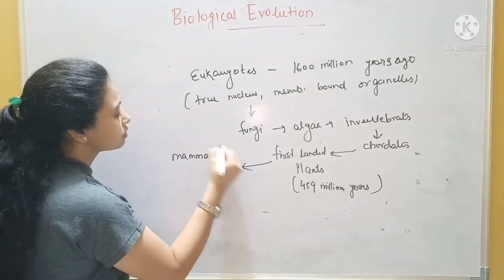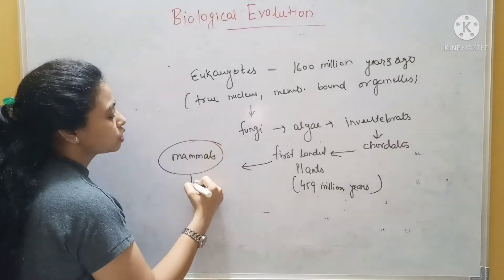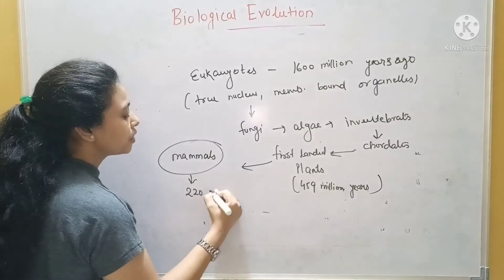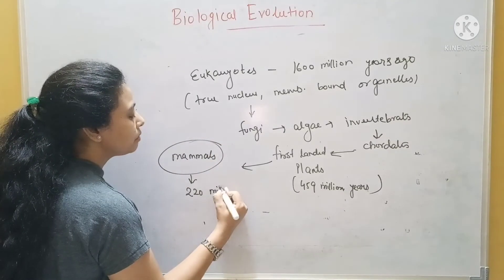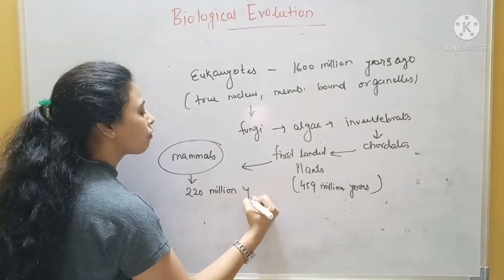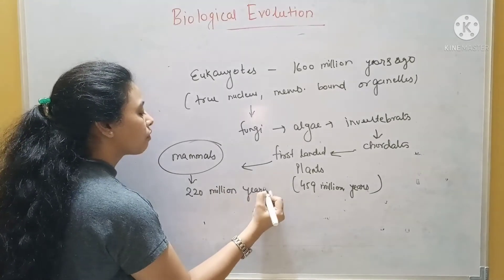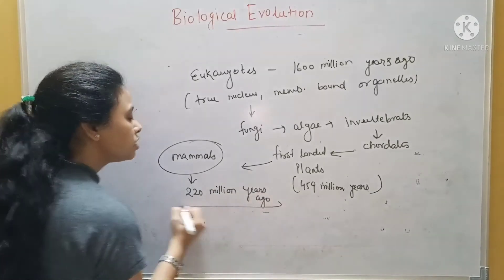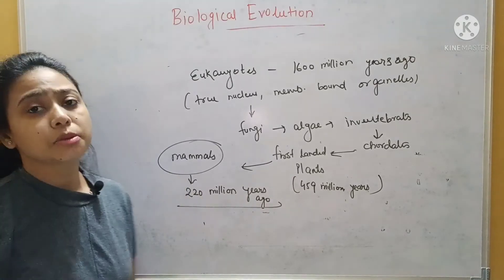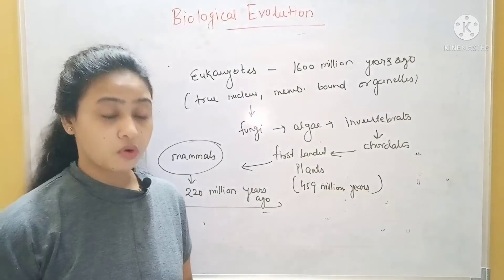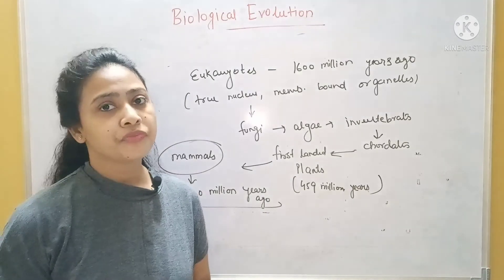Ultimately, mammals evolved around 220 million years ago.